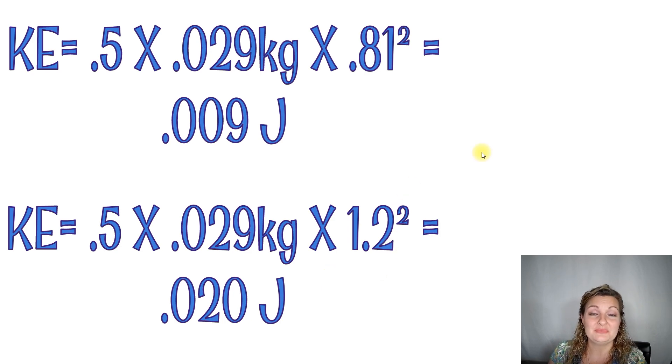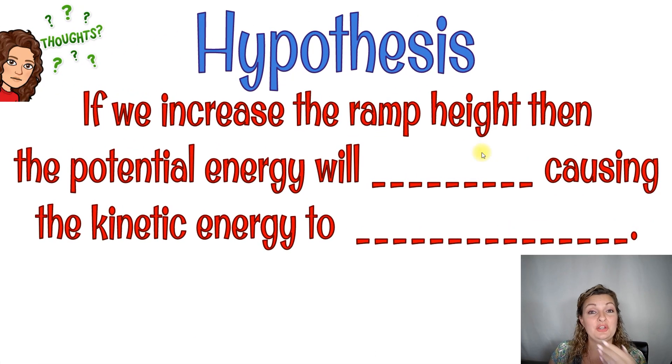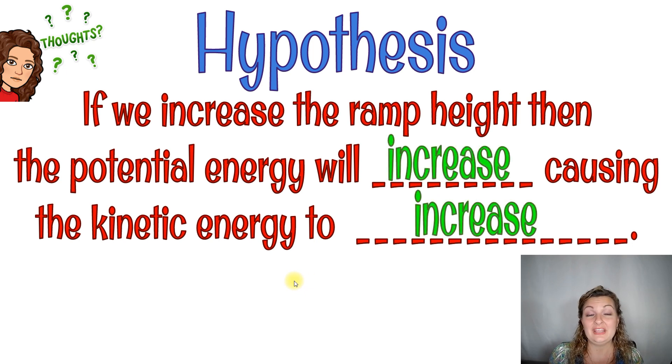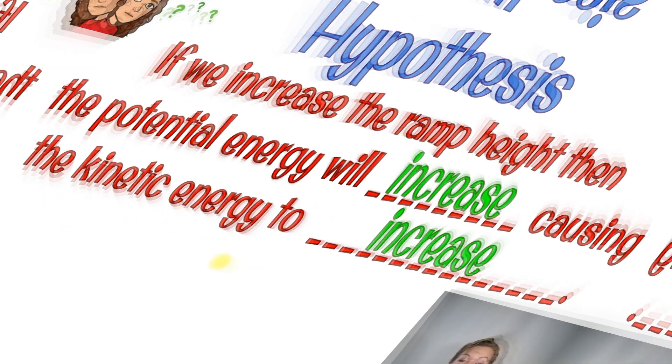All right, so what does this mean overall? We need to go back to our hypothesis. Hopefully you got these right. If you didn't, that's okay. That's what a hypothesis is about, right? It's about testing it, figuring it out, and being able to experiment and go further next time. So if we increase the ramp height, then the potential energy will increase, causing the kinetic energy to also increase.